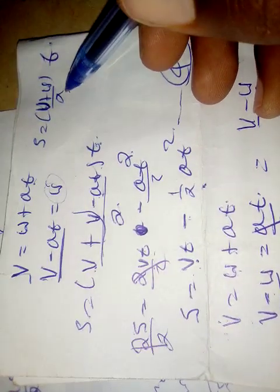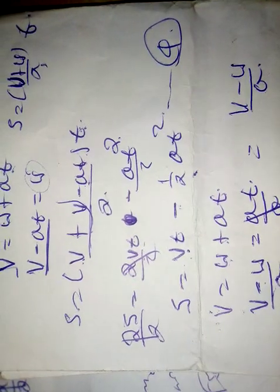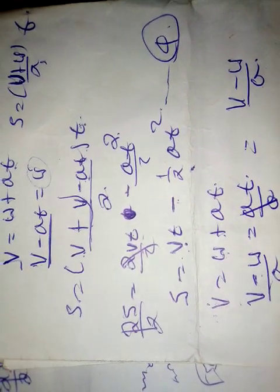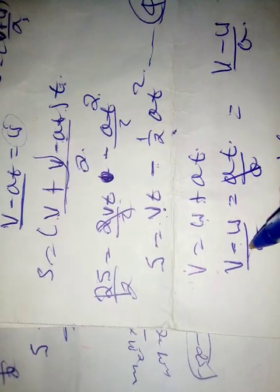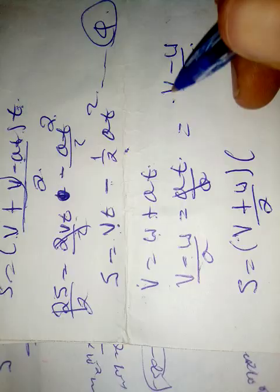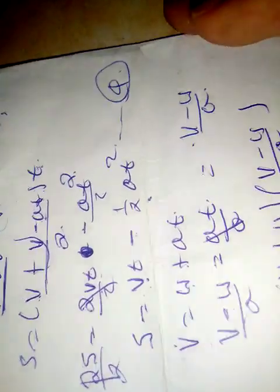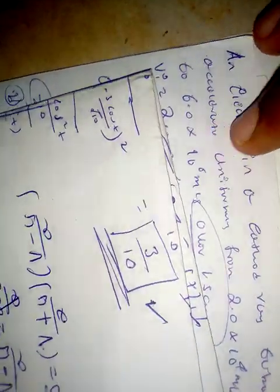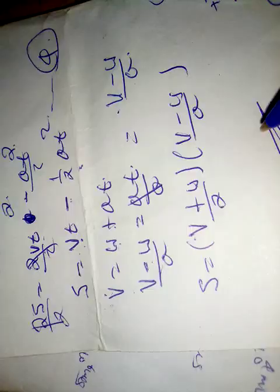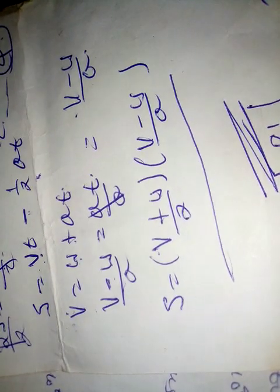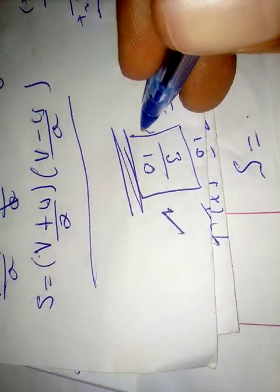This is the formula. S is equal to U. V plus U over two. T is equal to V minus U over A. This is equal to V plus U over two times V minus U over A. I will draw this. I will draw the card.